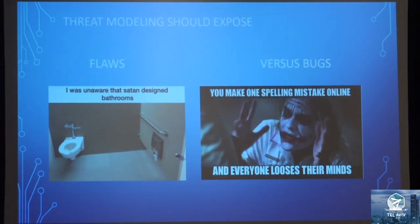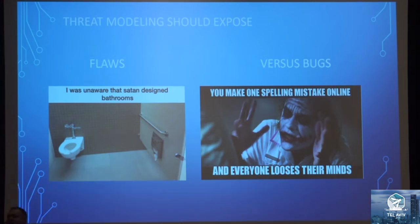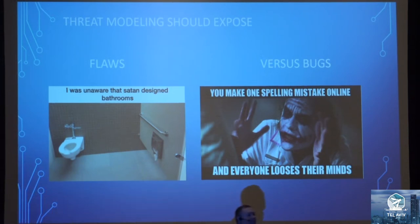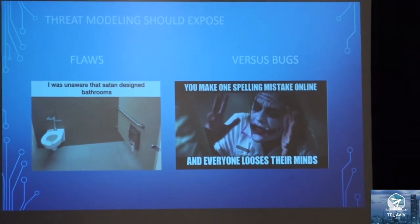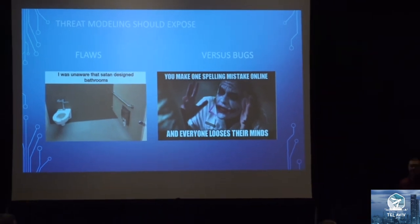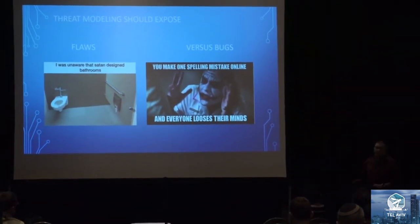Threat modeling should also answer the question of flaws versus bugs. The threat model talks about your design — your design is all about flaws. Implementation issues are the bugs. If you work out the flaws, it's a lot cheaper because the flaws get built in. If you build in a flaw and implement it perfectly, every implementation will have that flaw with dependencies based on it — it's going to cost a lot of money and time to fix. That's why threat modeling is so good.